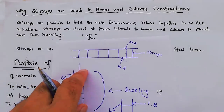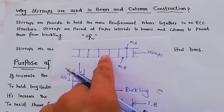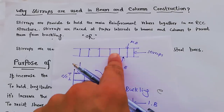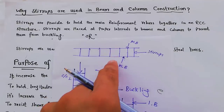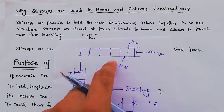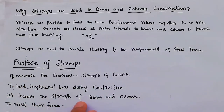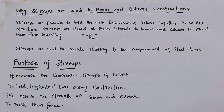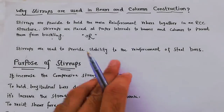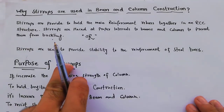If we don't provide stirrups in column and beam, the steel cannot be held together in the RCC structure. When we provide stirrups, it increases the strength of beam and column. Another key purpose is to resist the shear force — everybody knows that we use stirrups to resist shear force.